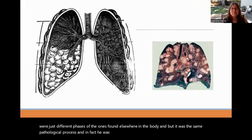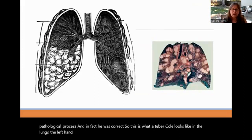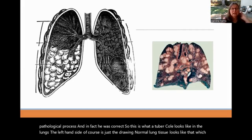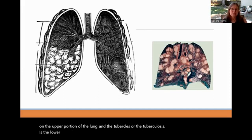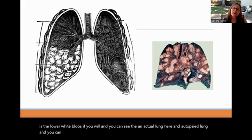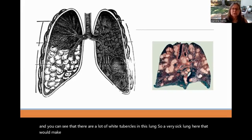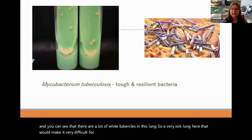This is what a tubercle looks like in the lungs. On the left is a drawing showing normal lung tissue in the upper portion, and tuberculosis as the lower white blobs. On the right you can see an actual autopsied lung with many white tubercles — a very sick lung that would make it very difficult for the patient to breathe.